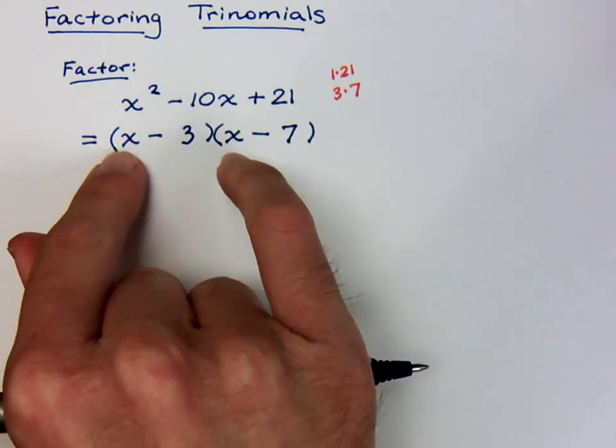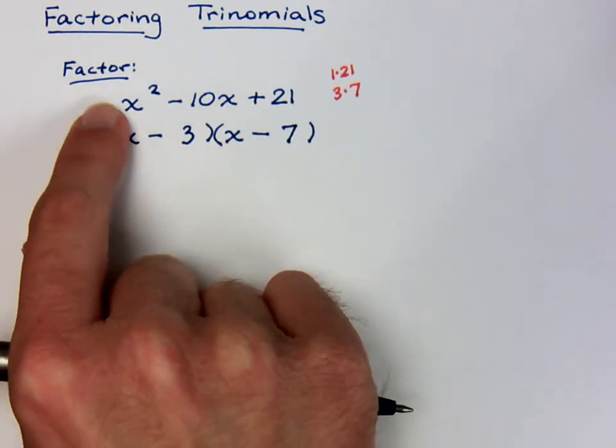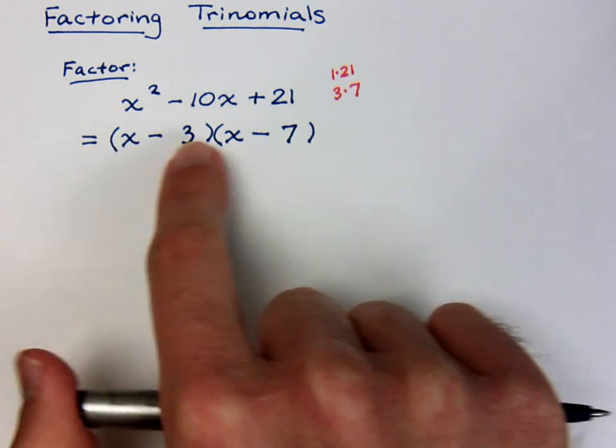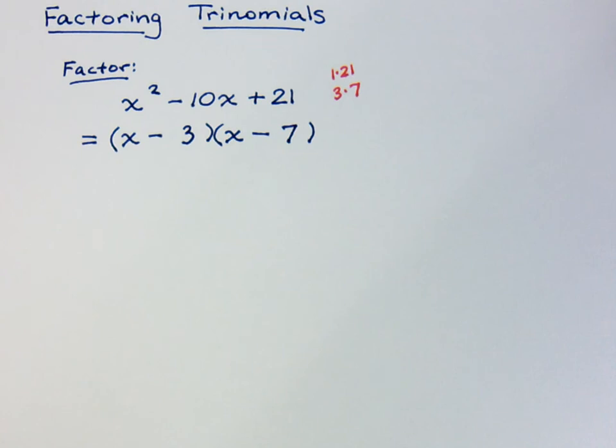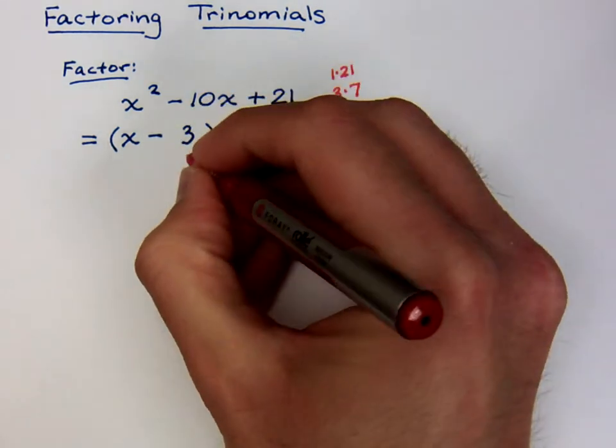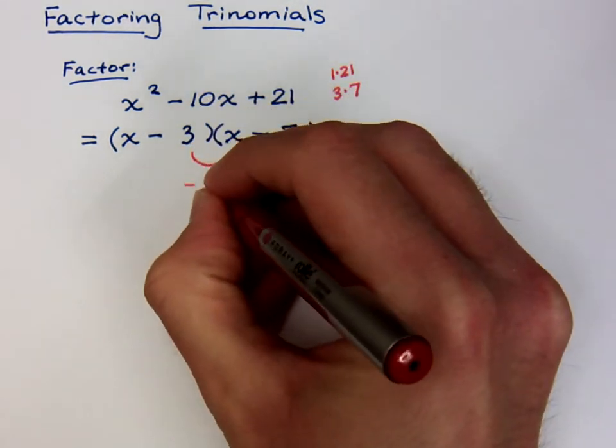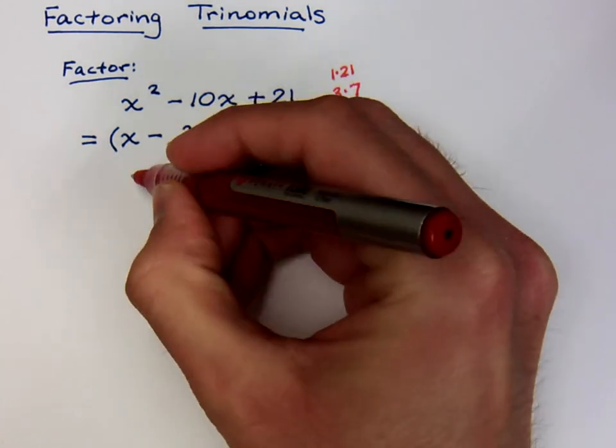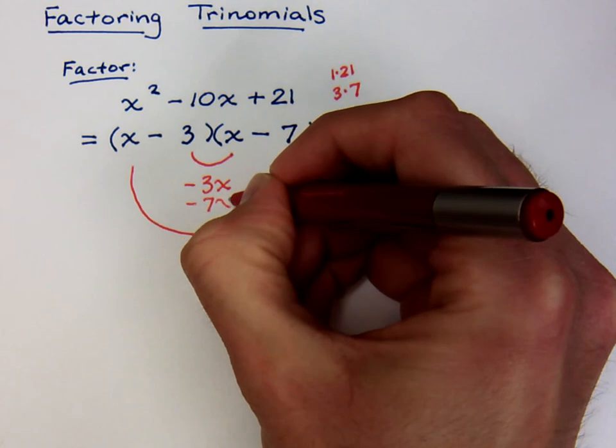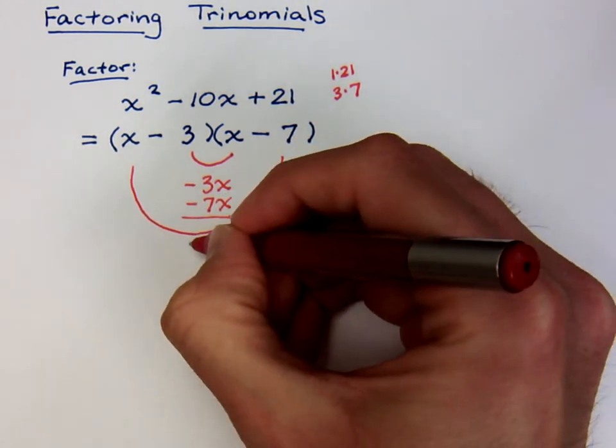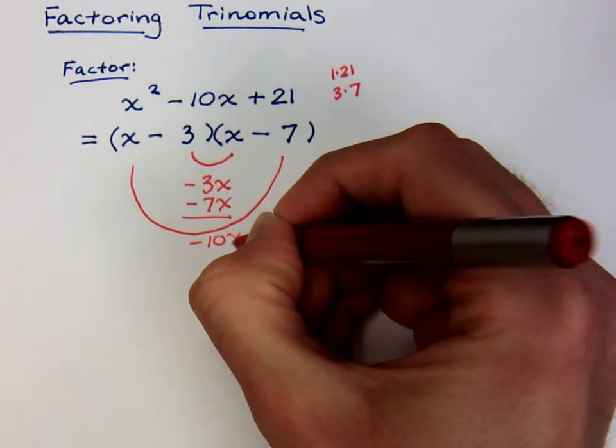So we check this. X times X is X². Negative 3 times negative 7 is positive 21. Now we check the inside and outside pieces. Inside is a negative 3X, and outside is a negative 7X. So if these guys combine, we get a negative 10X. So our answer is correct. Always, always check your factorization.